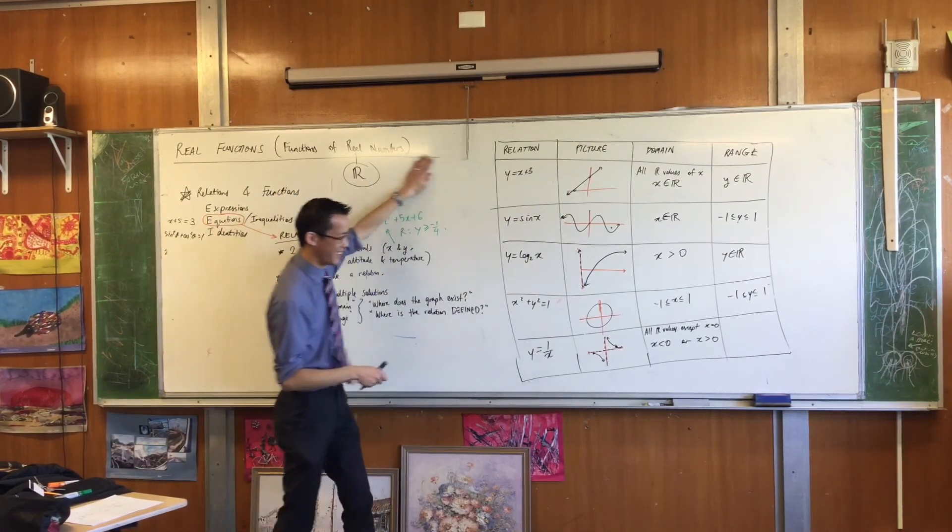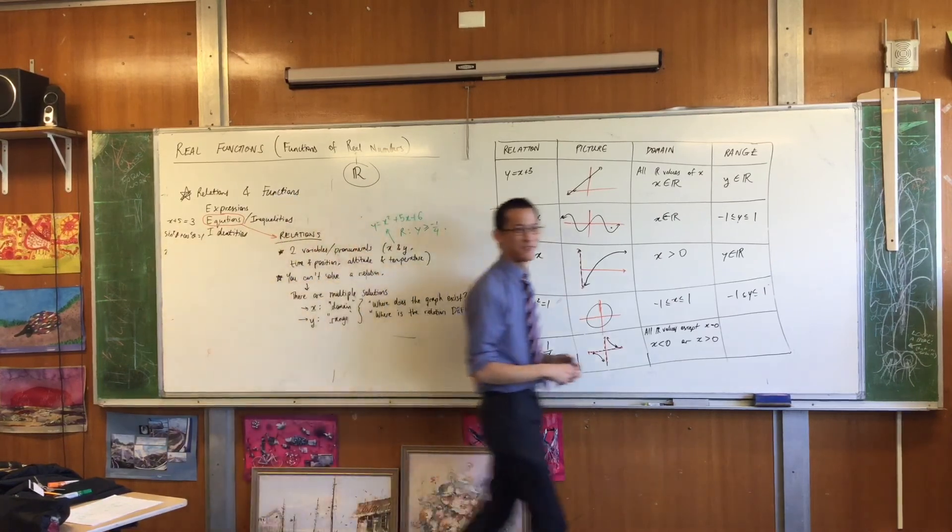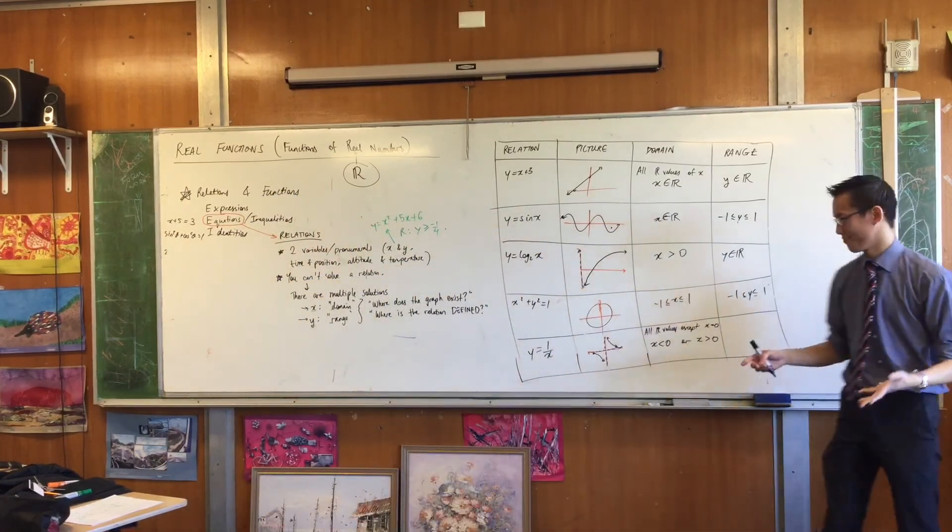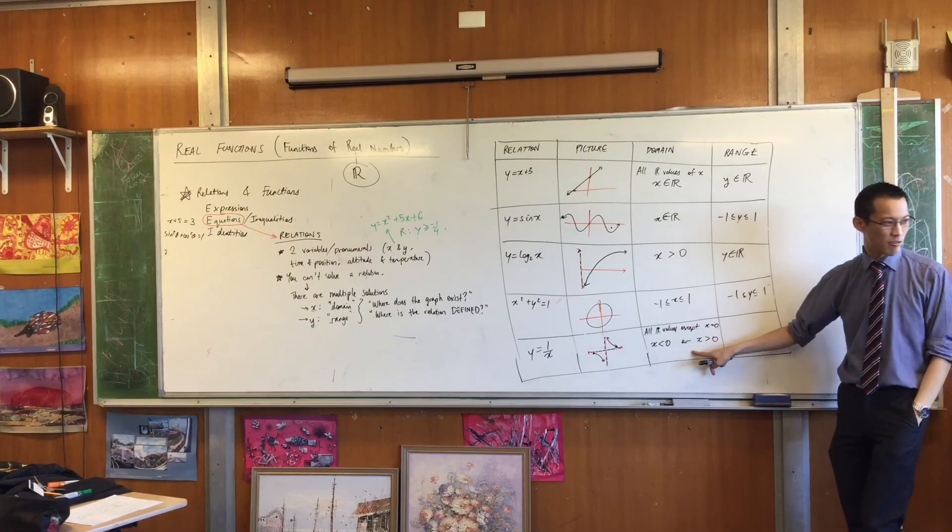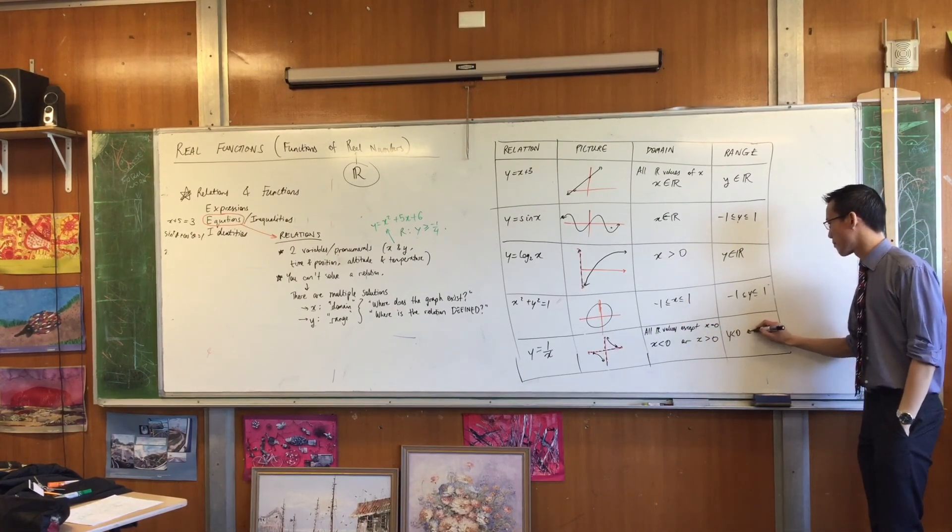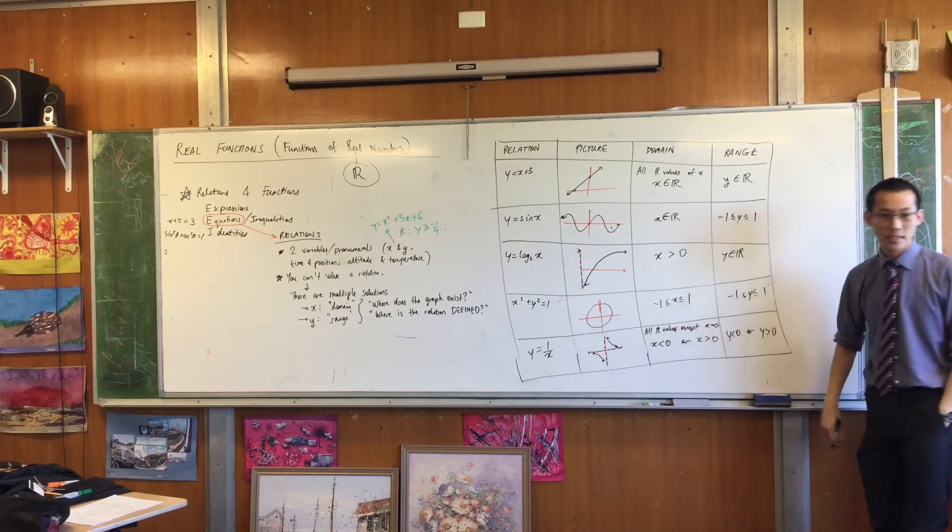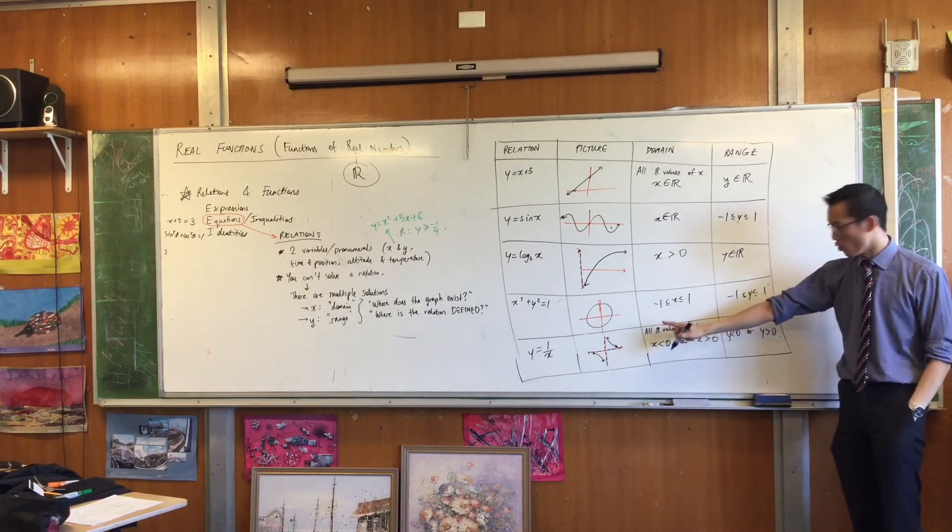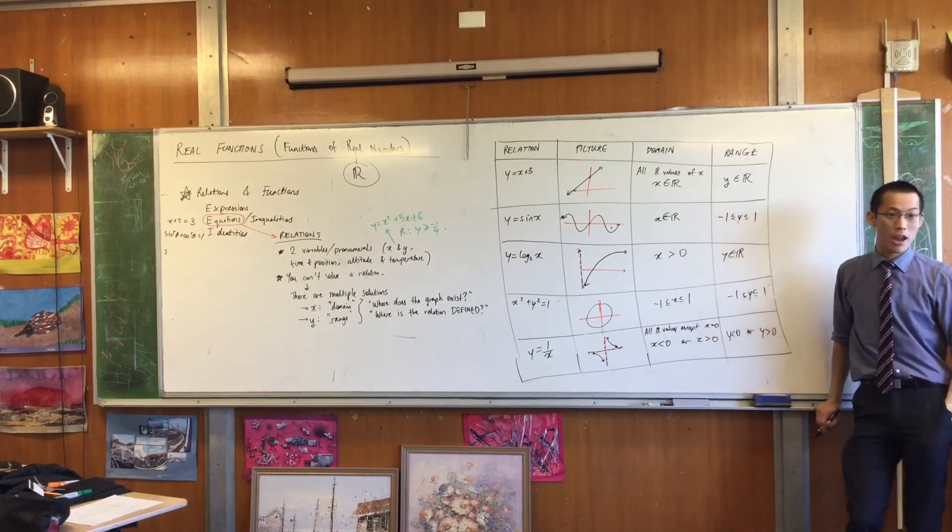So, tell me how to write the range. It's just like this, but with y's. You can also say all real. Alternatively, you could say all real values except y equals zero, and that would be fine.